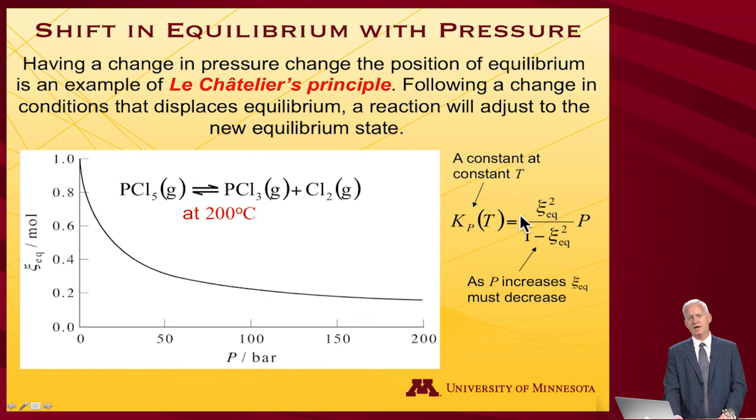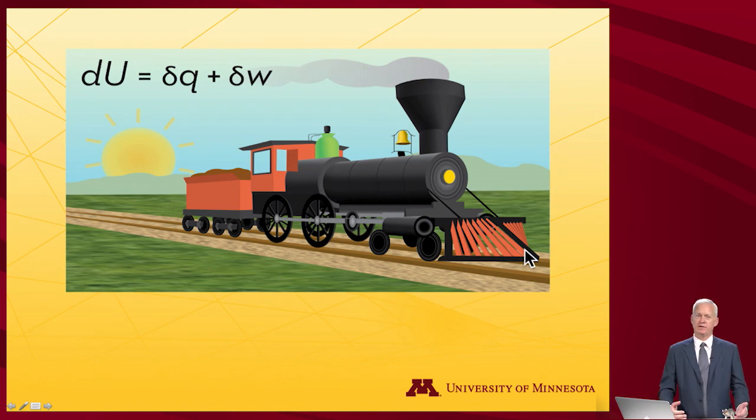And this is just the actual equation describing how extent is going to vary as we vary P in order to make Kp a constant. Okay, that is the specific example and an illustration of Le Chatelier's principle.